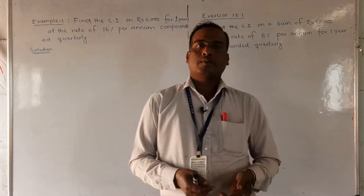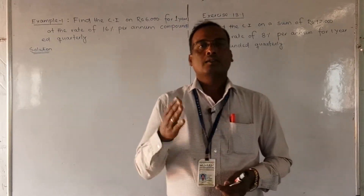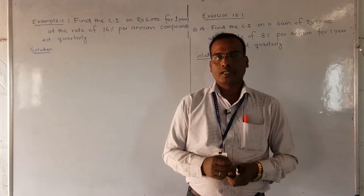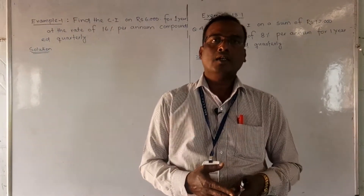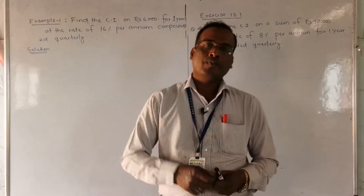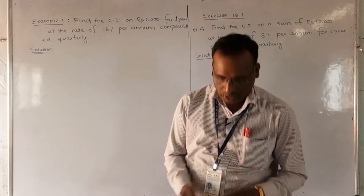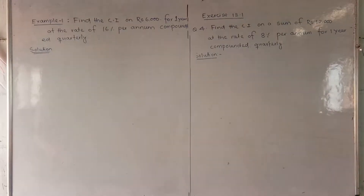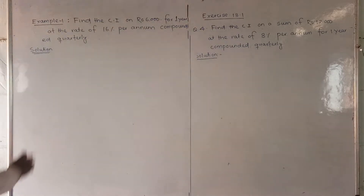If the rate of interest is given per annum, then we have to find out the conversion period of three months. That means per year, four times we have to calculate the interest, and whatever interest is calculated, we add it to the principal every instant. So let us see how to find compound interest when interest is calculated quarterly. First, read the question.